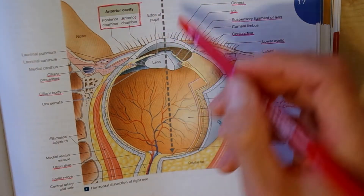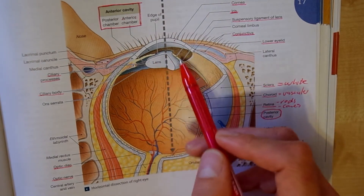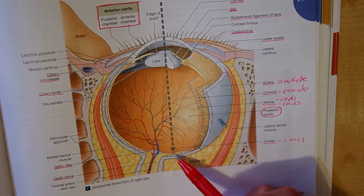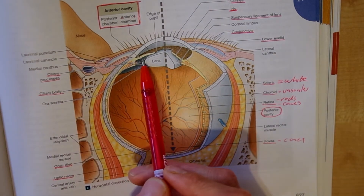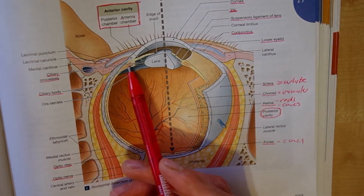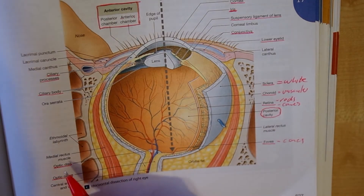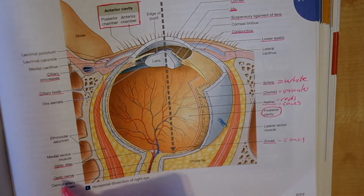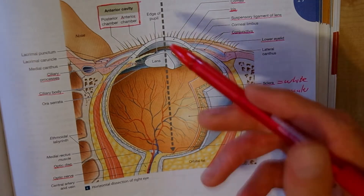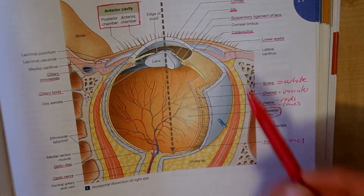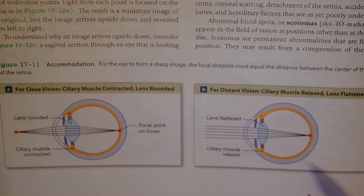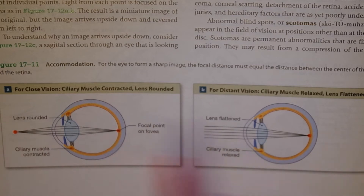The lens and the ciliary processes change the lens shape so that light falls mostly on the fovea. The ciliary body holds and changes the shape of our lens. Next we've got our optic disc and the optic nerve, which goes to the brain and interprets the information that enters the eye to produce the picture that we see. Here you can see how the ciliary muscle contracts or relaxes for different distances of focus.